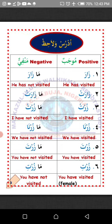Mujab — positive — is the state of a sentence in Arabic that means something has happened. Manfiyun — negative — is the state of a sentence that means nothing has happened. For instance: number one — Zara, he has visited; Mazara, he has not visited. Number two — Zarat, she has visited; Mazarat, she has not visited.